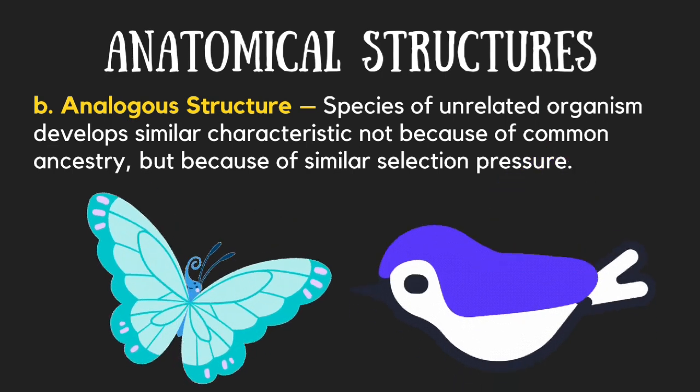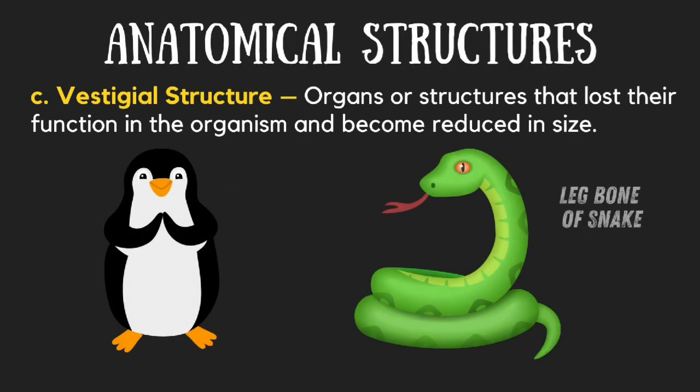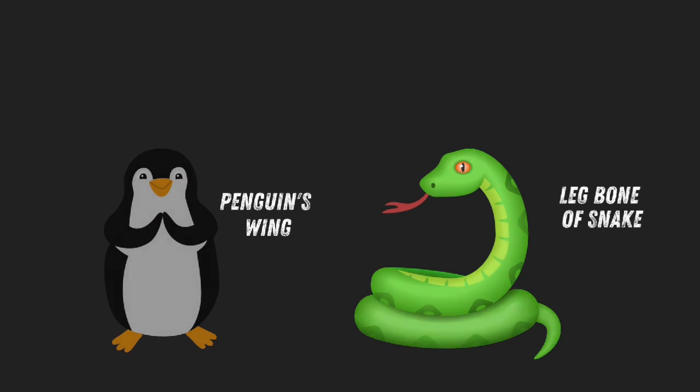Organs or structures that have lost their function in the organism and become diminished in size are known as vestigial structures.